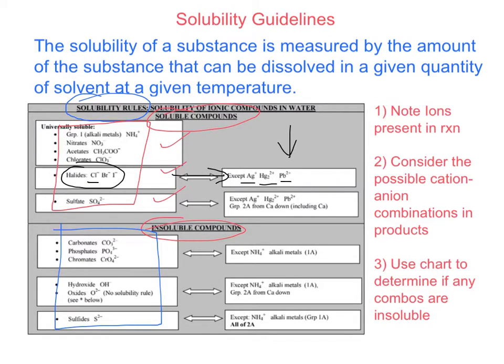So, for example, let's say I had a compound that was PbCl2. The first thing I do, number one, note the ions present in the reaction. And two, consider the possible cation and anion. So, first, my ions are Pb2+ and Cl1-, if I uncross this formula. So, I look at this chart here, and I figure out, well, where are these particular ions? I look for them.